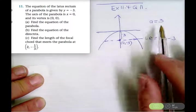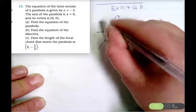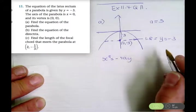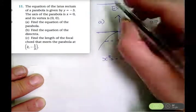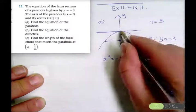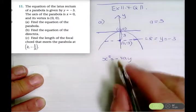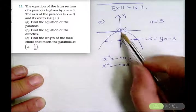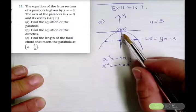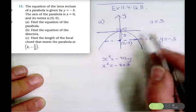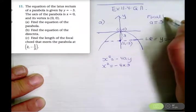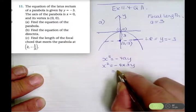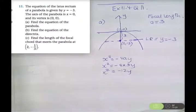This is a concave down parabola, so it's of the type x squared equals negative 4ay. The axis is x equals 0 and the vertex is (0,0). So the equation of the parabola is x squared equals negative 4 times 3 times y. The focal length a is always positive, and we have a concave down parabola, so the equation is x squared equals negative 12y. That's part A.